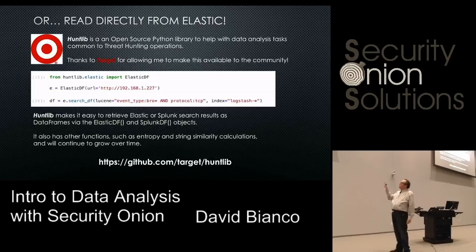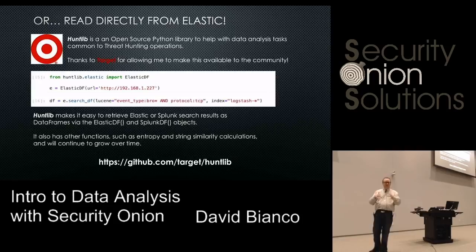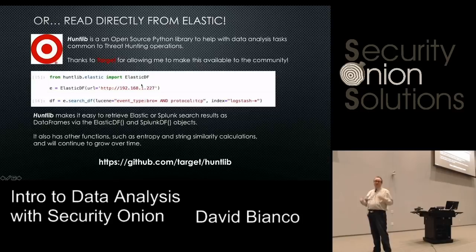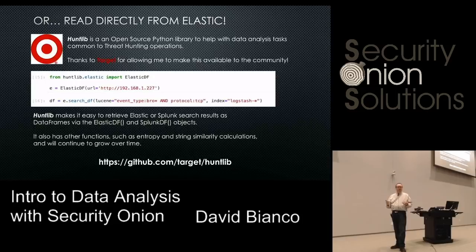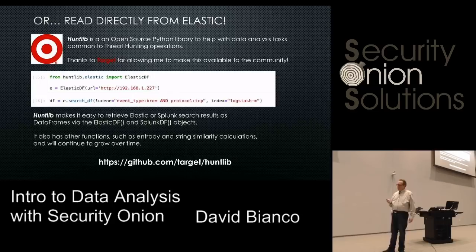If you're on Security Onion, it looks a little bit different because by default Security Onion does not allow you to contact the elastic server from off the Security Onion box — it's restricted to localhost. So probably the best way is to set up an SSH tunnel and then just say localhost. That way you get connected and you don't have to export your stuff and transfer it as a CSV file — you can just get it directly from Elastic. The Splunk version is extremely similar, but we're not showing it because it's an open source talk.